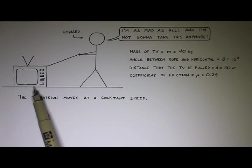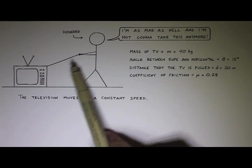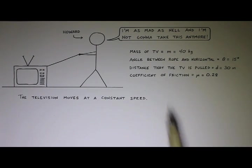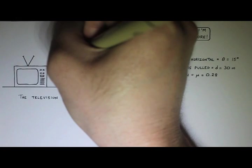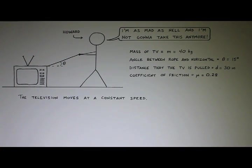Here's Howard, and there's his TV. He is pulling it by a rope attached to one corner of the television. The mass of the TV is 40 kilograms. The angle between the rope and the horizontal is 15 degrees. The distance that he pulls the TV out to the trash is 30 meters. The coefficient of friction, mu, is 0.28. And the television moves at a constant speed — remember that's really code for no acceleration.